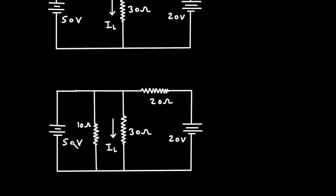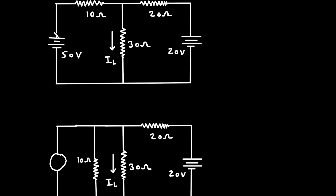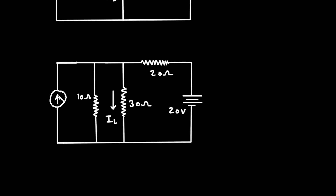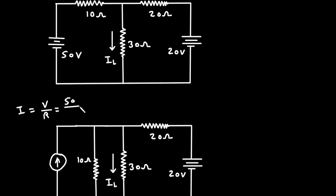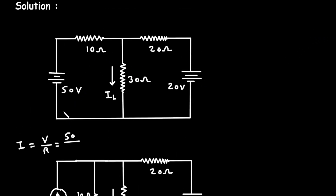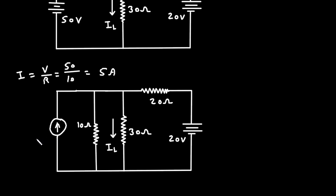Now we have to change this 50 volt voltage source to a current source. The direction of the current source will be according to the polarity of the voltage source. Here the positive side is on the upper side, so the current direction will be upward. The current value is given by I = V/R, so it is 50 divided by 10, which equals 5 ampere.